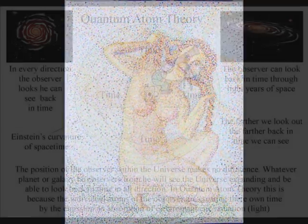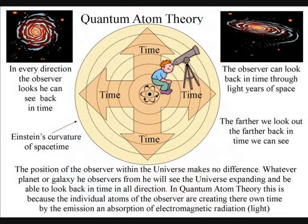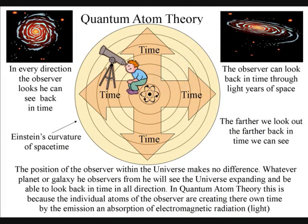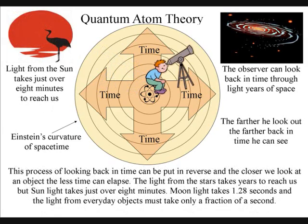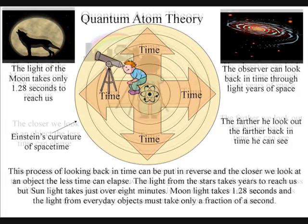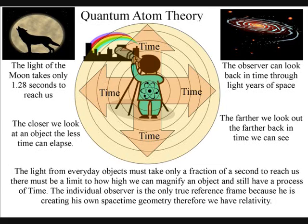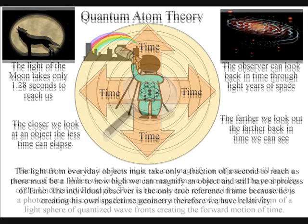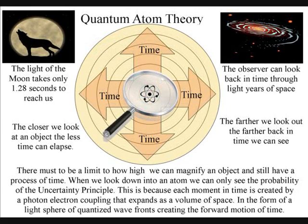Because of this, the observer is at the centre of his own broken symmetry and can look back in time through light-years of space in every direction. And the position of the observer within the universe makes no difference. Whatever planet or galaxy he observes from, he will see the universe expanding and be able to look back in time in all directions.